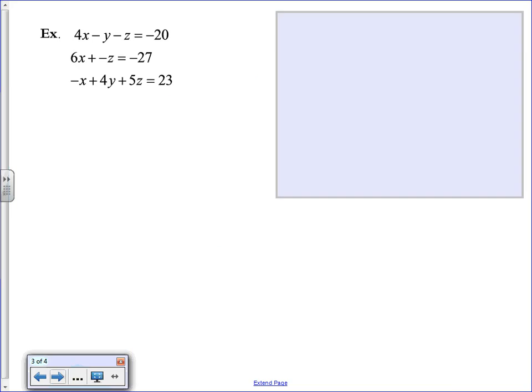You can also use a matrix for a system with more than two variables. So this system has X, Y, and Z in it. It's got three equations. We want to make sure they're all in standard form, which they are. Notice that the second equation is missing the Y term.